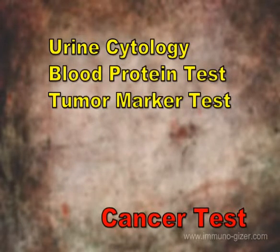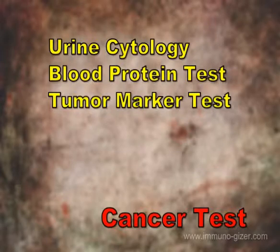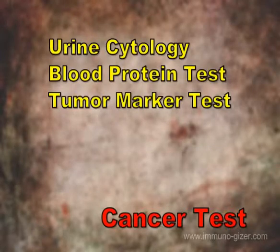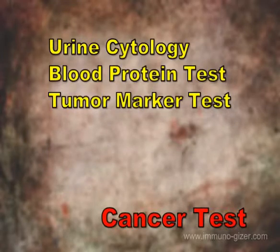Tumor marker tests: tumor markers are chemicals made by tumor cells that can be detected in your blood. But tumor markers are also produced by some normal cells in your body, and levels may be significantly elevated in non-cancerous conditions. This limits the potential for tumor marker tests to help in diagnosing cancer.